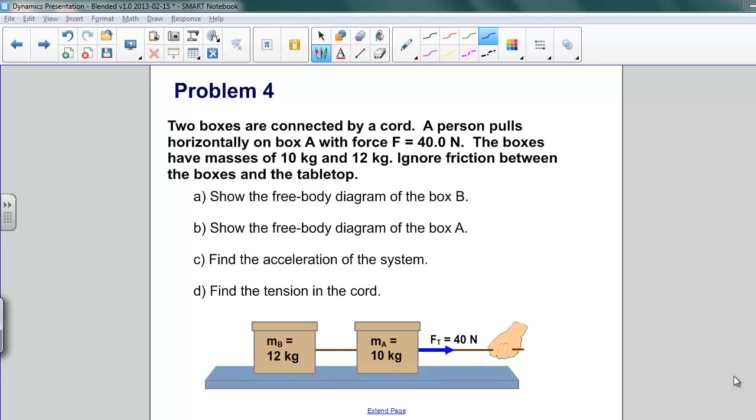Here's our fourth example. This is two boxes connected by a cord. A person pulls horizontally on the first box, box A, with a force of 40 newtons. The boxes have masses of 10 kilograms and 12 kilograms respectively. Ignore friction between the boxes and the table top.